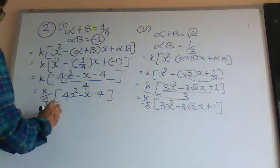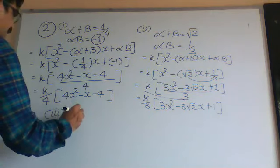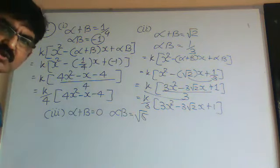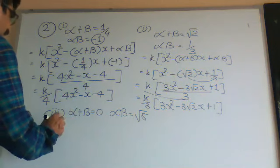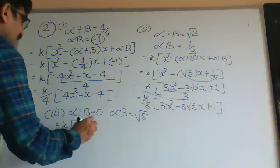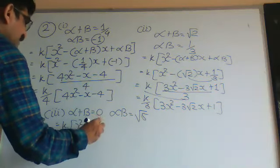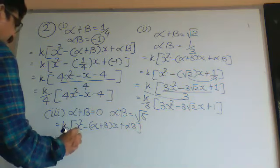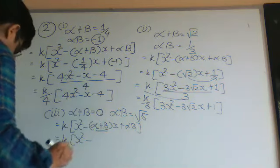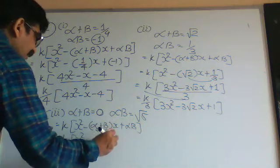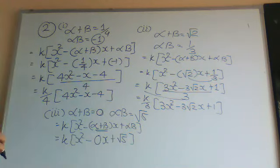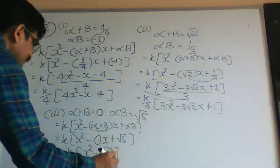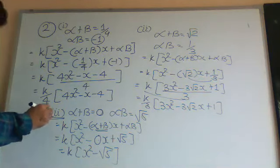For number 3: the sum of roots α + β is 0 and the product of roots αβ is √5. Using the formula k into [x² minus (α+β)x plus αβ], we put α + β = 0, so the x-term becomes 0·x = 0, and α·β = √5. No need to take LCM. Since 0 times anything is 0, the answer is simply x² + √5. That is Question Number 3 of this exercise.